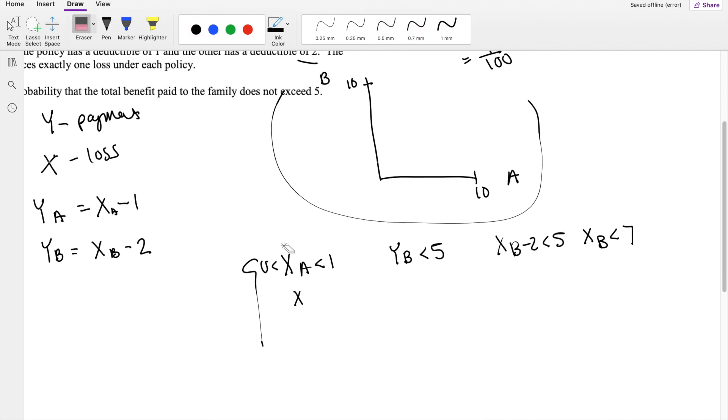Likewise, if the loss of B is between 0 and 2, because B has a deductible of 2, so the company is not going to pay anything out of pocket until it exceeds the deductible, then Y_A, the payment paid because of A, has to be less than 5. But then we know Y_A is equal to X_A minus 1 is less than 5. So you get X_A is less than 6.